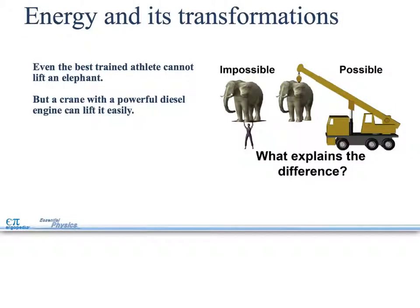Now we finally made it into energy, energy and its transformation. Even the best trained athlete cannot lift an elephant, but a crane with a powerful diesel engine can lift it easily. What explains the difference between these two? Chapters nine and ten introduce the physics of energy. Energy to me is the most important part of physics. It's still part of the whole mechanics and motion area of physics, but it is so broad dealing with all the different types of energy that are out there and why a guy can't lift an elephant, but a crane can lift an elephant. We're going to talk about how that energy is transformed from one form to another.